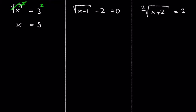When solving radical equations with an even index, like in this example, we have to check our solutions by plugging them into the original radical equation. When you square a radical equation, you sometimes get a solution that is not a solution to the original — we call this an extraneous solution. So always check your answers. Let's plug in 9 for x: the square root of 9 equals 3, so 9 is a solution and we are done.